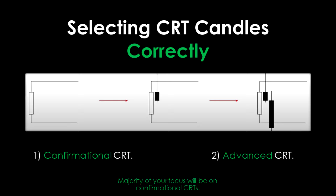Selecting CRT correctly. There are two types of methods for selecting your CRT: Confirmational CRT and Advanced CRT. Before I explain both, I want to emphasize that most of you should focus predominantly on Confirmational CRT and forget about Advanced for now. Confirmational CRT has a confirmational aspect to it, making it more suitable and increasing your margin better compared to Advanced CRT.